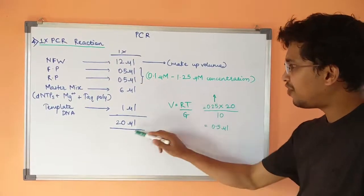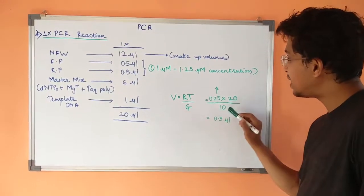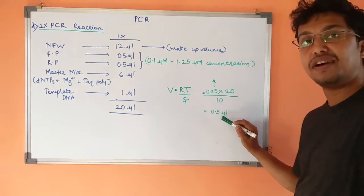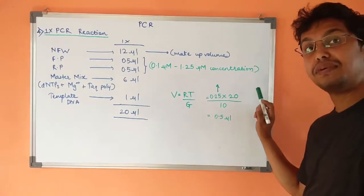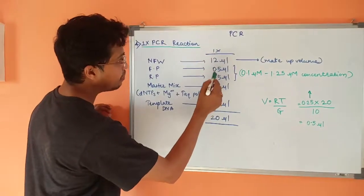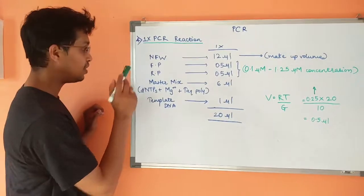My total volume of reaction is 20 µL, and my given concentration of primer is 10 micromolar. That comes out to be 0.5 µL, which I can add from 10 micromolar. This is how I have added 0.5 µL of forward primer and reverse primer each.